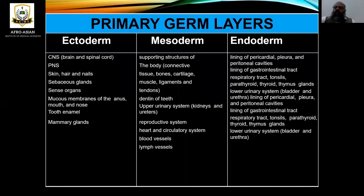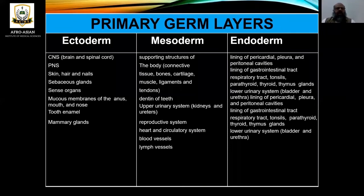These three layers are very important. The first one is the ectoderm. Structures formed from ectoderm include the central nervous system, the peripheral nervous system, skin, hair, nails, sebaceous glands, sensory organs, mucous membrane of the anus, mouth, and nose, tooth enamel, the covering of the tooth, and mammary glands.